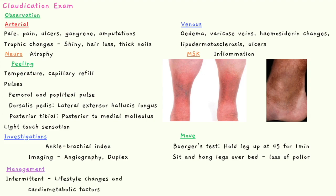For management, if there is intermittent claudication — where the patient doesn't always have pain when walking or it disappears — you can focus on lifestyle changes such as exercise, diet, and quitting smoking, as well as addressing cardiometabolic factors such as diabetes, hyperlipidemia, and blood pressure.